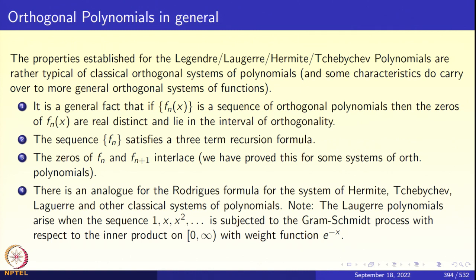The interval of orthogonality for the Legendre and Chebyshev polynomials is (−1, 1), and all zeros lie in the open interval (−1, 1). For the Hermite polynomials, the interval of orthogonality is the real line, with measure e^(−x²)dx. For Legendre, the measure is the Lebesgue measure dx. For Chebyshev, the measure is dx/√(1−x²). For Laguerre, the interval is (0, ∞) with measure e^(−x)dx.